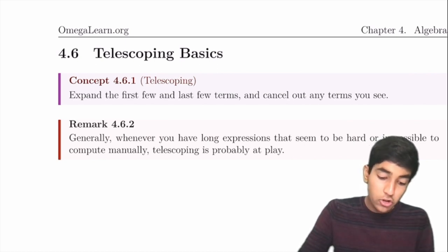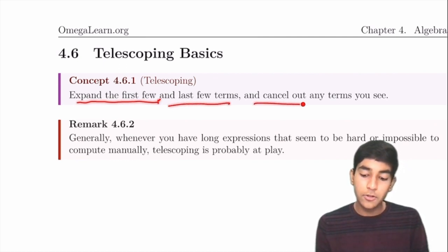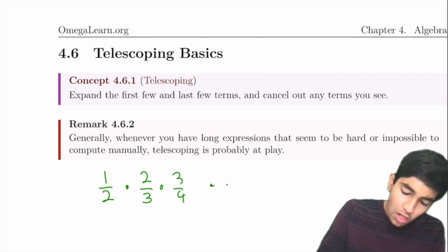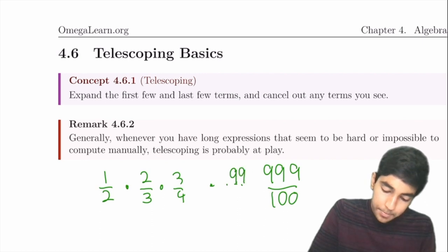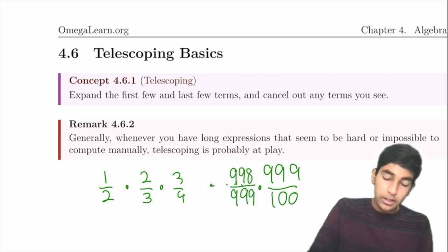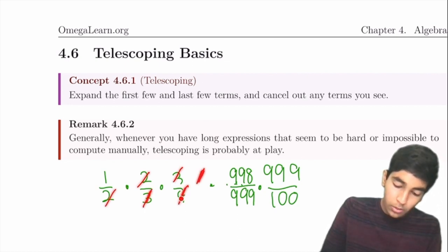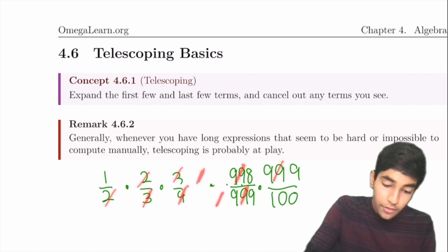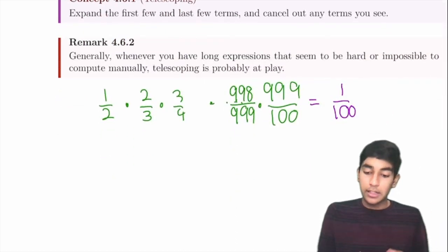Telescoping is mass cancellation in a sequence. Expand the first and last two terms and cancel. Classic example: (1/2) × (2/3) × (3/4) × ... × (999/1000). Notice the 2s, 3s, 4s, and so on all cancel, leaving just 1/1000.